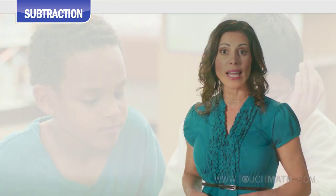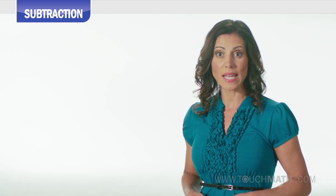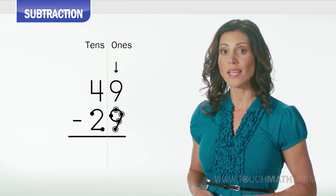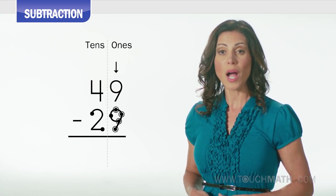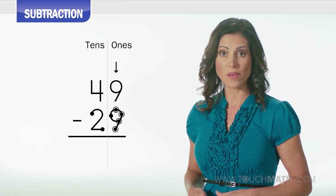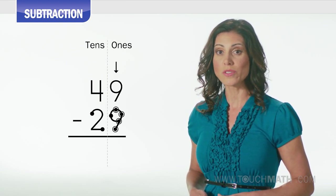Because you can subtract any number from 9, students will never have to count backward from any number higher than 18. For example, you can subtract any number from 9, so in the problem 49 minus 29, subtract 9 from 9 and get 0, and 4 minus 2 equals 2.